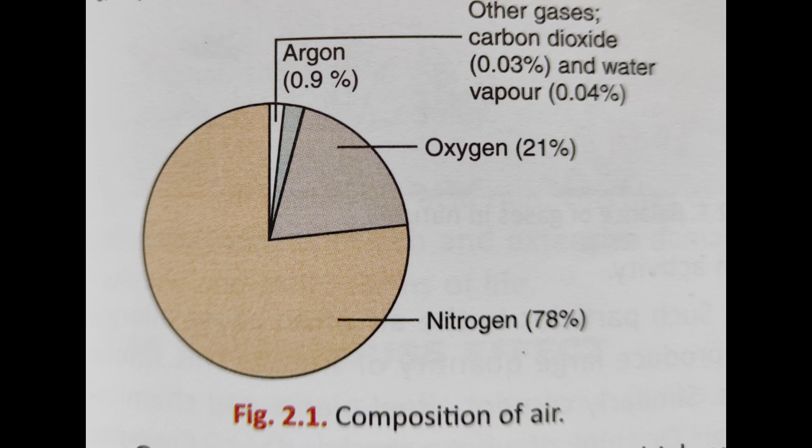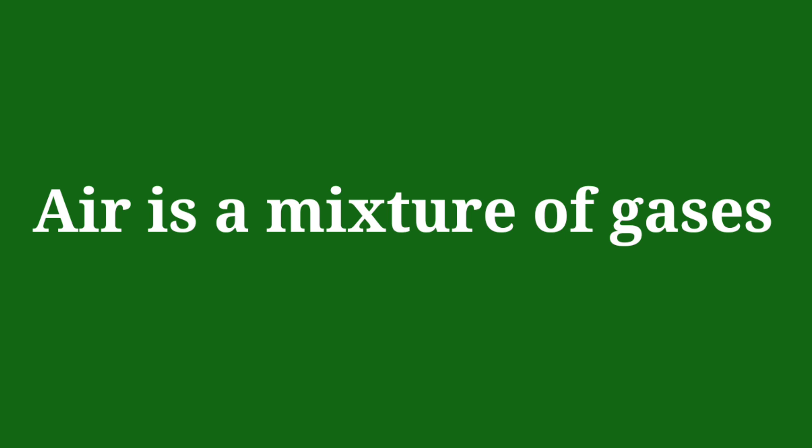So this diagram shows the percentage composition of air by percentage. So nitrogen is 78 percent, remember 21 percent only oxygen, that means one-fifth.